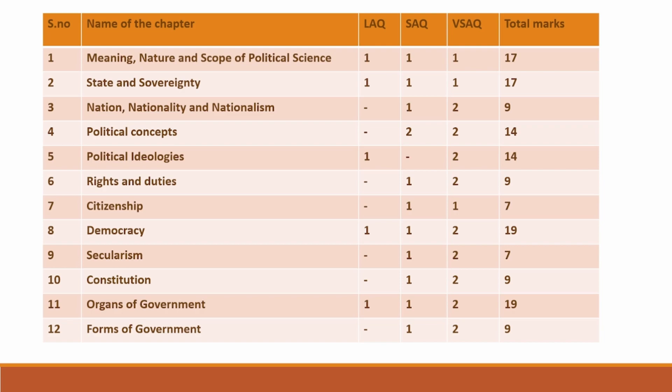Chapter 3: Nation, Nationality and Nationalism. You will get 1 SAQ and 2 VSAQs from this chapter. The weightage for this chapter is 9 marks. Chapter 4: Political Concepts. You will get 2 SAQs and 2 VSAQs. The weightage for this chapter is 14 marks.